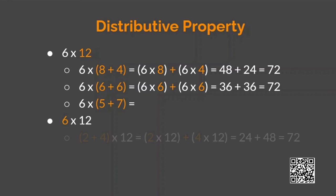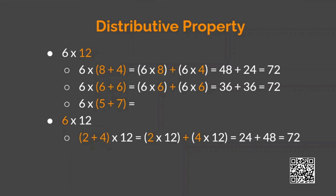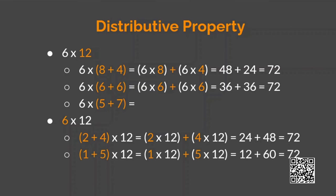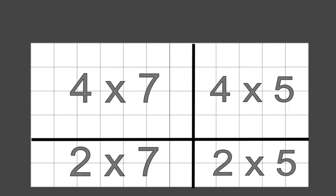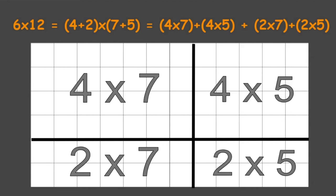First, we split 6 as 2 and 4, which will be 2 times 12 plus 4 times 12. Next, we can split 6 as 1 and 5 also, which will be 1 into 12 plus 5 into 12. Here, we have split the same 72 boxes as 4 smaller rectangles. The 12 columns are split as 7 and 5 and the 6 rows are split as 4 and 2. You can add up all these boxes in the smaller rectangles again to get 72 as the total number of boxes.